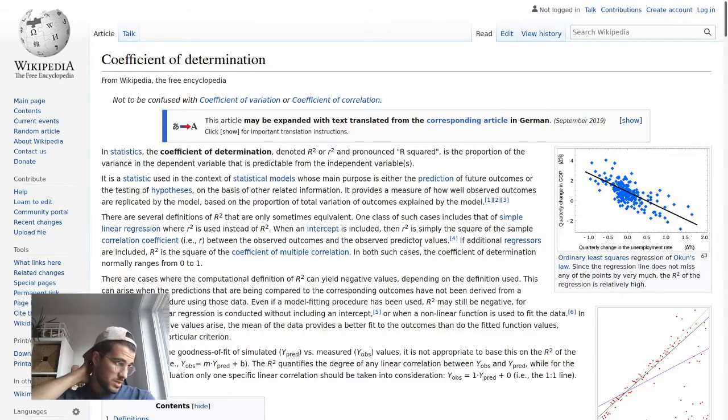So in today's video, what we're going to do is double check how to implement the coefficient of determination, R-squared, in C++ code in order to implement it maybe in a library or something like that.